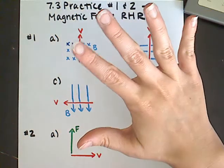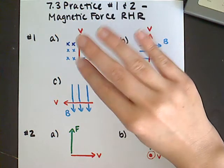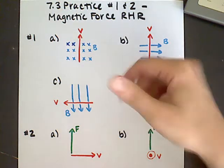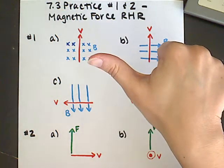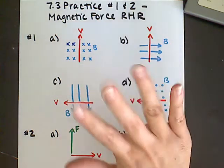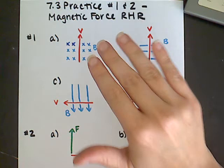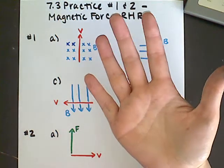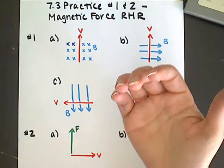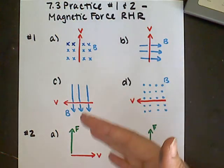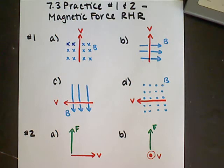As a reminder: when using our right hand to predict the direction of force, or to analyze a situation where magnetic force is exerted upon a charged particle or a current, the thumb always represents the direction of the charged particle's motion — that could be velocity or current. The fingers always represent the direction of the magnetic field the particle is passing through. The palm represents the direction of the force being exerted upon that charged particle. It's just a matter of twisting our hand into the proper configuration.